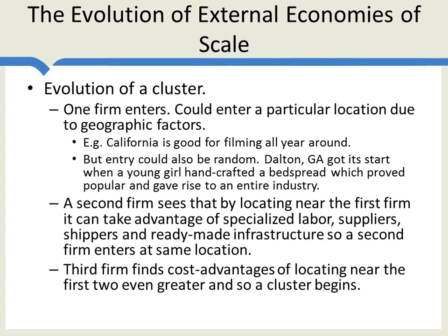The same thing is true for carpets, which are created through specialized machinery requiring informed, educated labor. So it's no surprise that the community colleges in Dalton, Georgia also specialize in teaching people the skills used to make carpets. Even producing toothbrushes can require a lot of specialized machinery, and it helps for a firm to be located in the Hangji area because it can easily find the labor and the expertise it needs to build toothbrushes. So this is how an industry evolves to become a cluster, and when it is clustered, it becomes the lowest cost place to produce these particular types of goods.